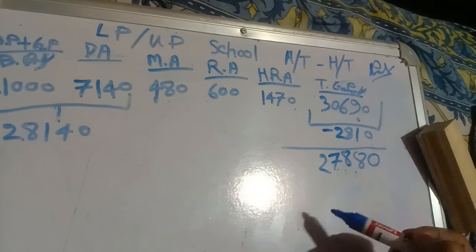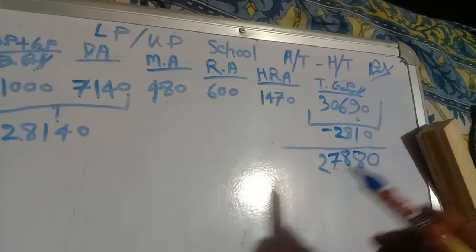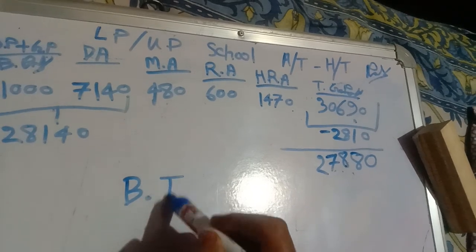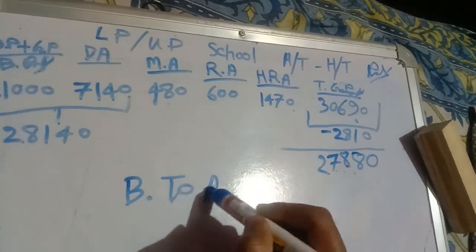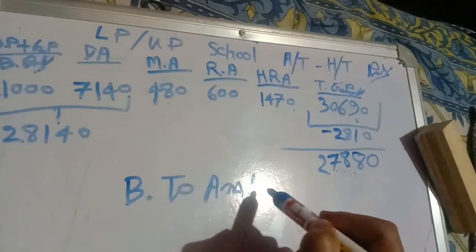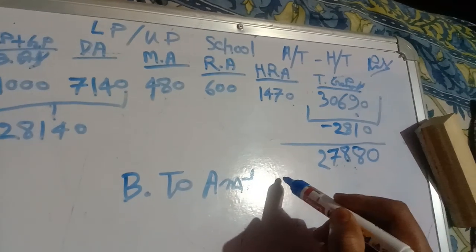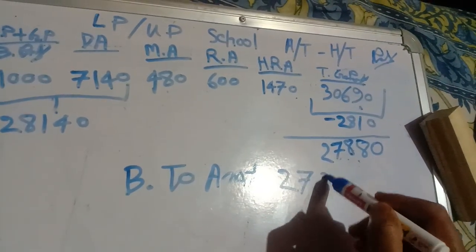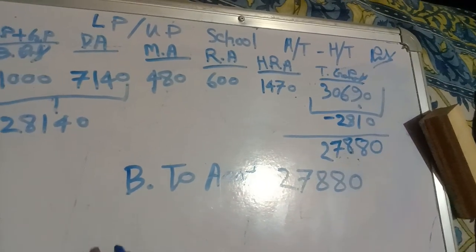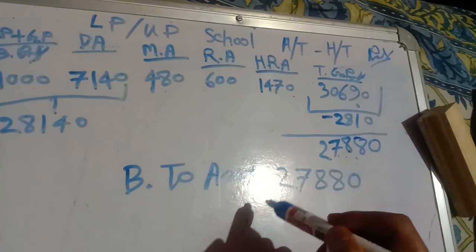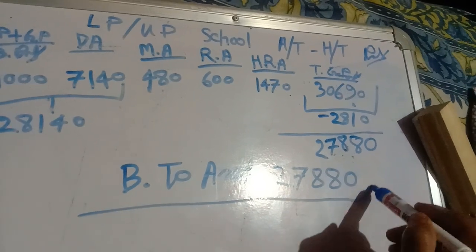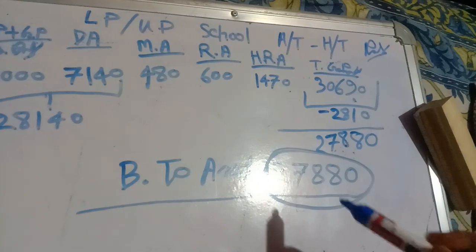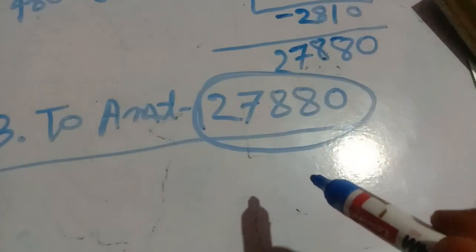Then to amount. And this is 27,820. LP UP, yeah yeah, I'm under cool.